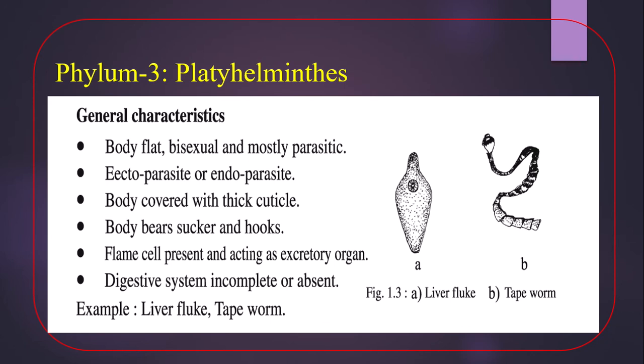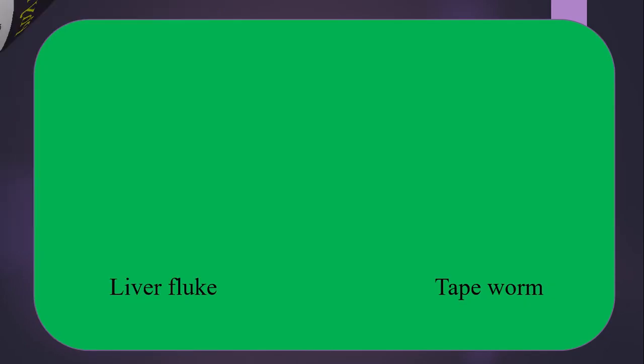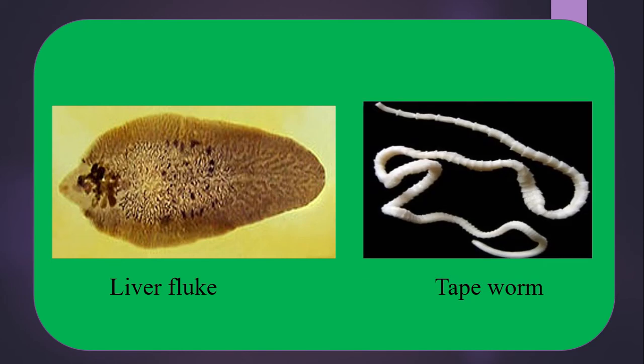The digestive system is incomplete or absent. Examples include liver fluke, tapeworm, etc. Here is the picture of the liver fluke and the picture of the tapeworm.